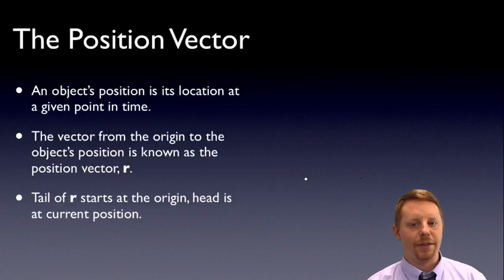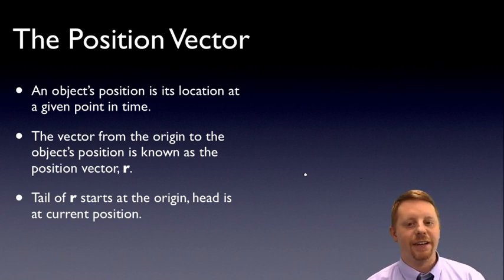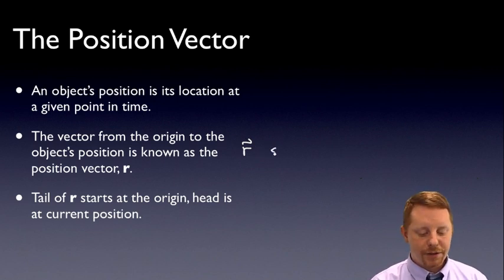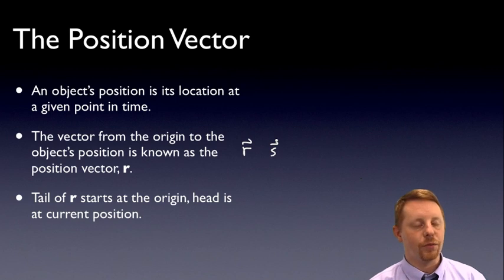Let's start by talking about the position vector. An object's position is its location at a given point in time. The vector from the origin, the zero zero or zero zero zero point if you're in three dimensions, to the object's position is known as the position vector. It's typically written as bold r, r vector, or r with an arrow over it to denote it's a vector, although sometimes you'll also see it written as an s vector. The tail of the position vector starts at the origin and its head is always at the current position of the object that you're tracking.